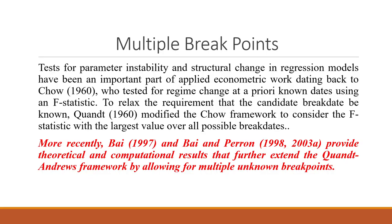The test for parameter instability and structural change in regression models have been an important part of applied econometric work dating back to Chow's test. Basically, we use Chow's test where we assign only one structural break in the entire series, testing for regime change at a priori known dates using an F-statistic. Chow's test can only be used when we are aware of the time period in which there is a structural break.